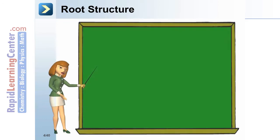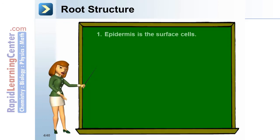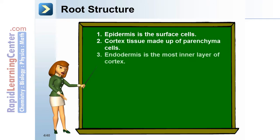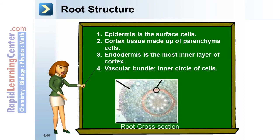Root structure: the epidermis is the surface cell layer; cortex tissue makes up the parenchyma cells. The endodermis is the most inner layer of the cortex, followed by the vascular bundle as the inner circle of cells. Identify the epidermis, cortex, endodermis, and vascular bundles in this root cross-section.